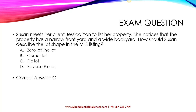The correct answer is C. When we go to list the property in the MLS, it will ask us for the shape of the lot. There are multiple options available based on what the yard looks like. A pi lot is something where the yard is narrow in the front but wide in the back, so that it looks like a pi — and that's why it's called a pi lot.